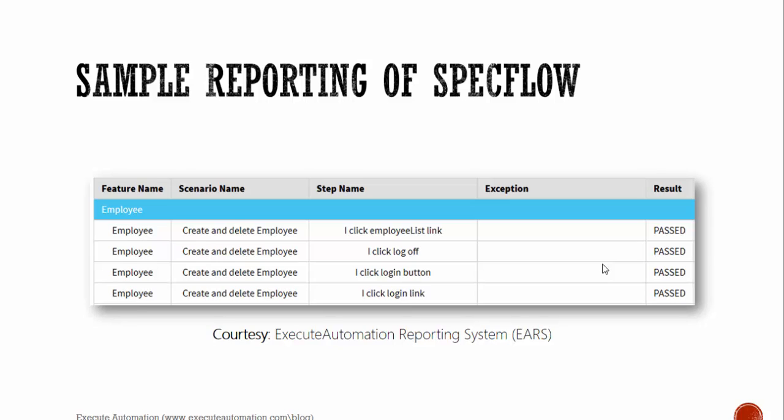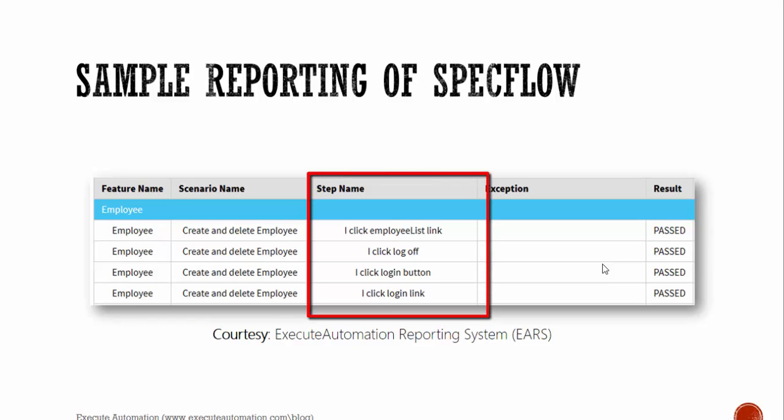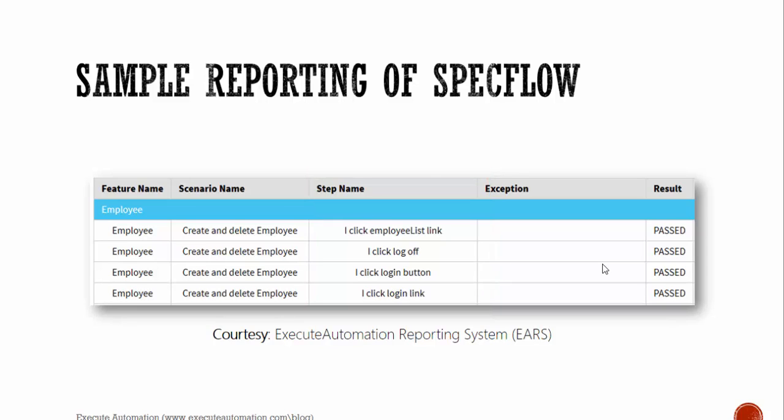For example, this is a sample report from SpecFlow where you can see I'm inserting the feature name 'Employee', the scenario name 'Create and Delete an Employee', and step names like 'I click employee list link', 'I click log off', 'I click login button'. If there is any exception it will also be added, along with whether the result is passed or failed. Using SpecFlow you can get this information out of the box using available libraries. This reporting is taken from the Execute Automation reporting system, also called EARS, from Udemy.